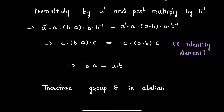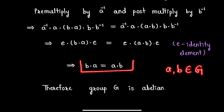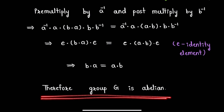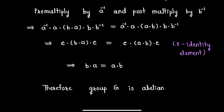Since a and b are any arbitrary elements of group G, and for any two arbitrary elements we get this expression, therefore our group G must be an abelian group, and this proves our result.